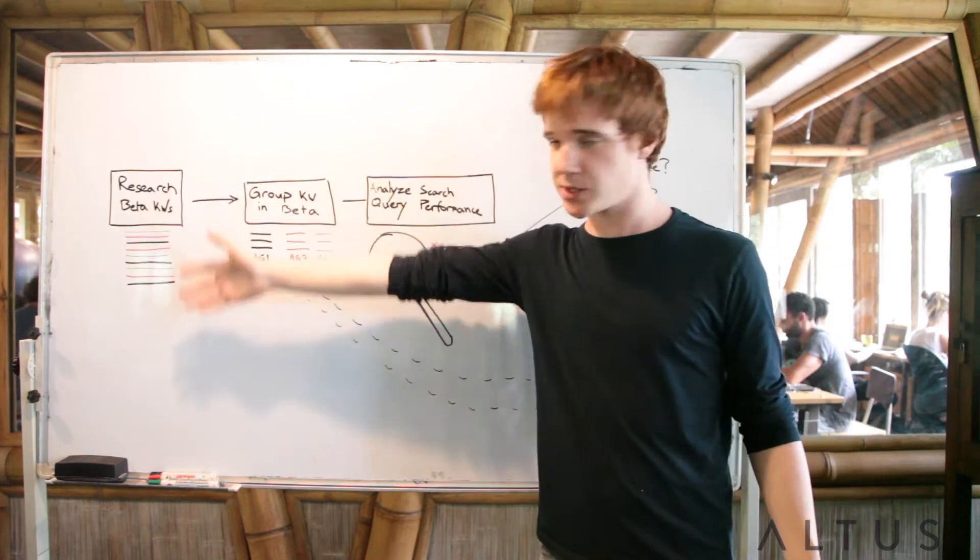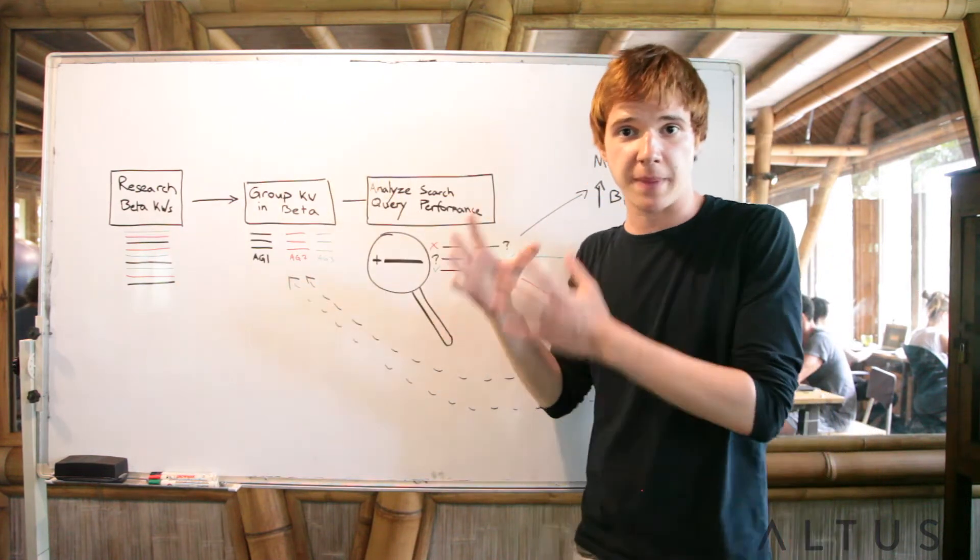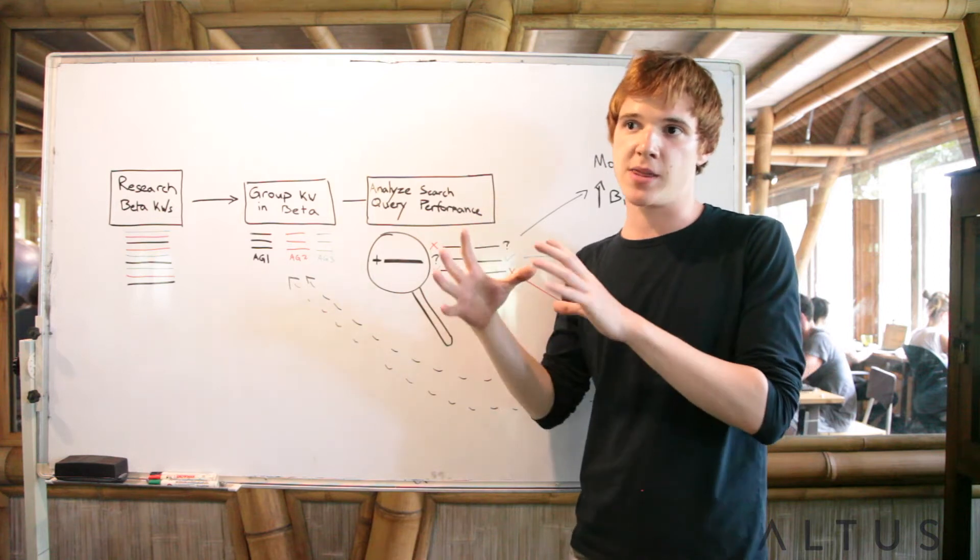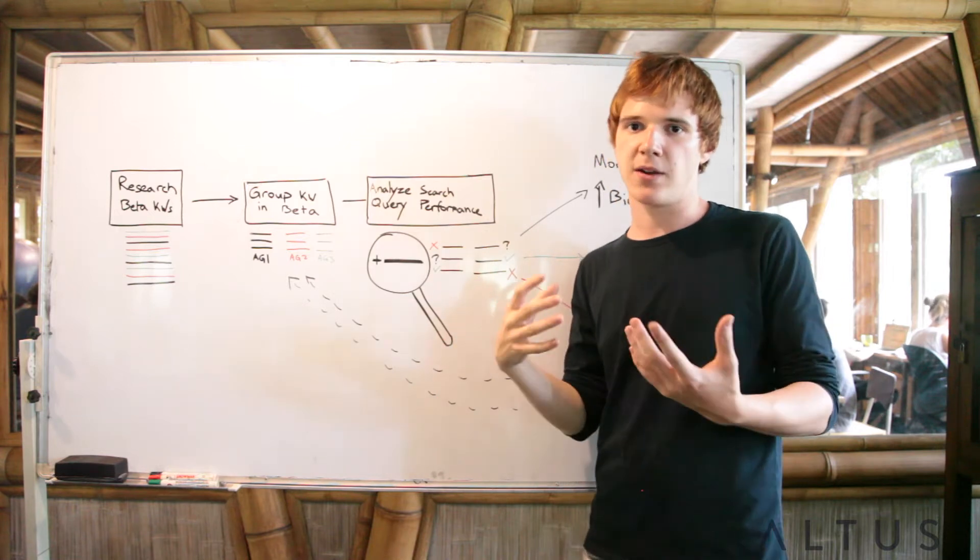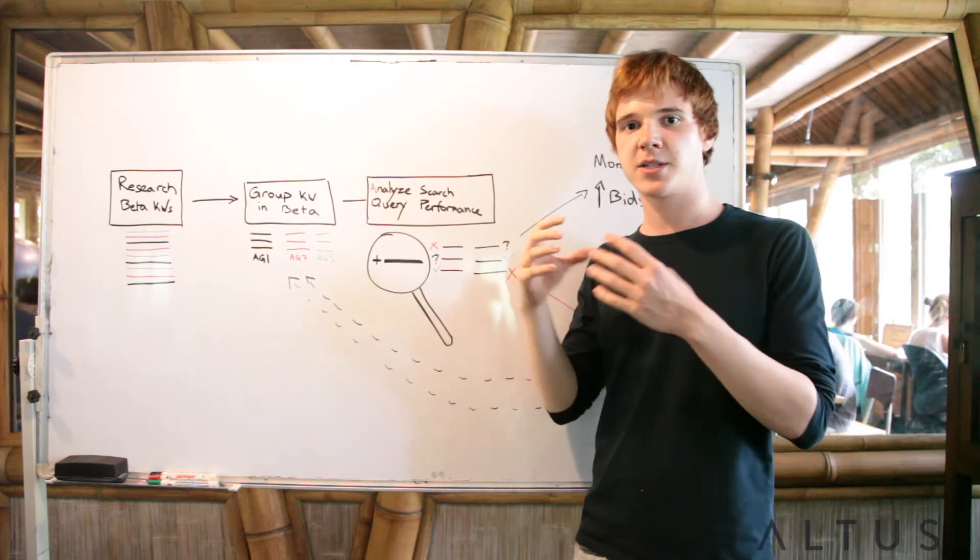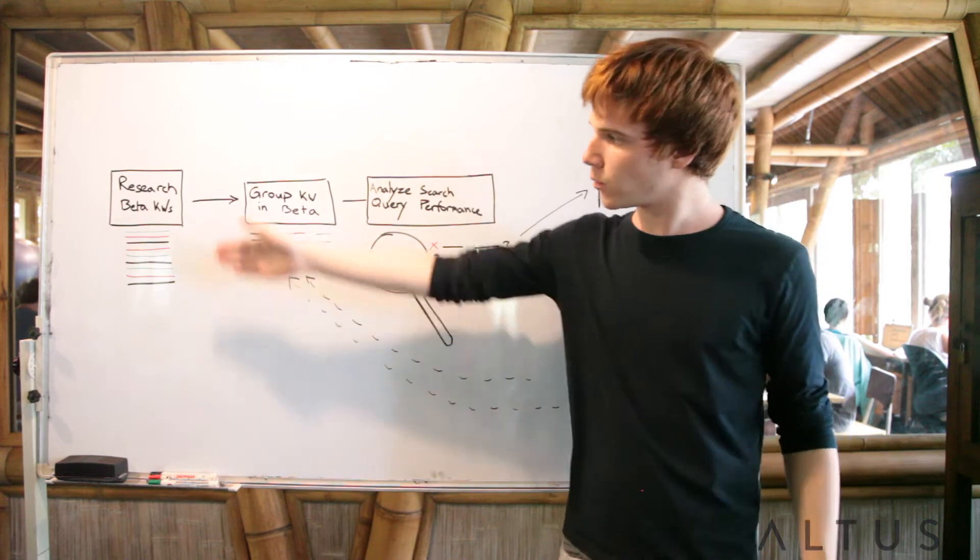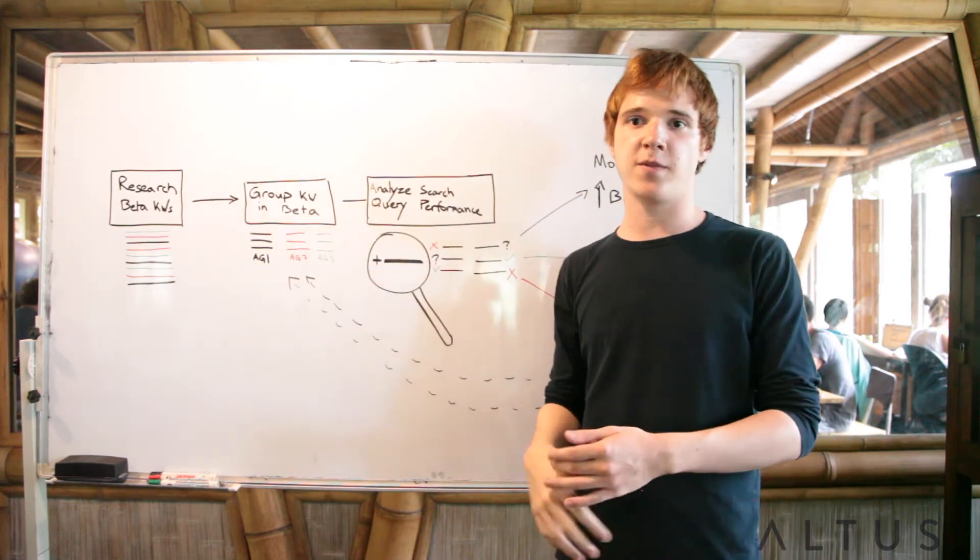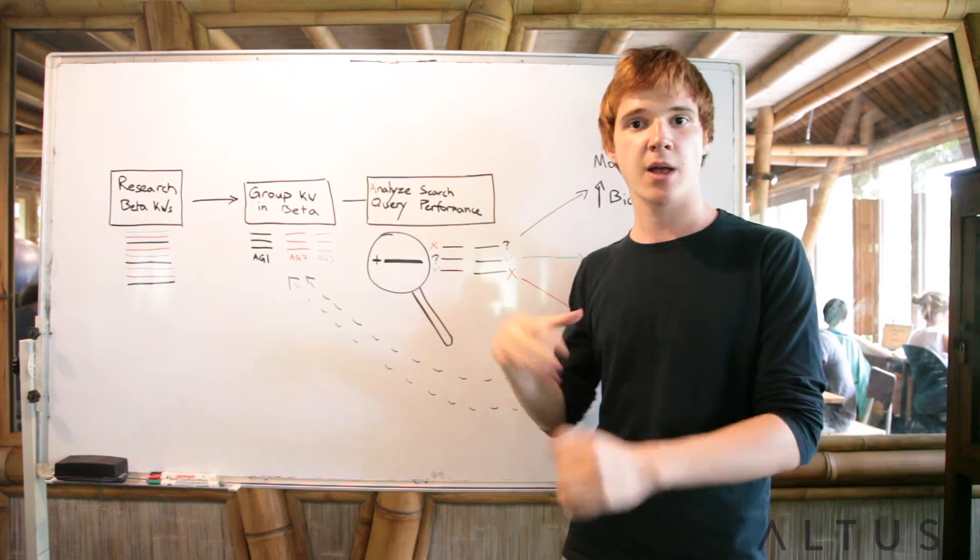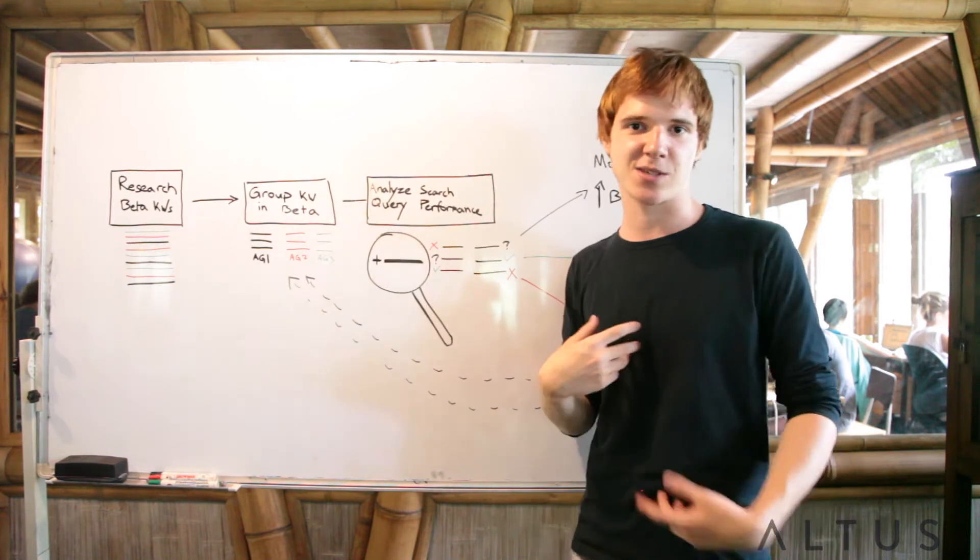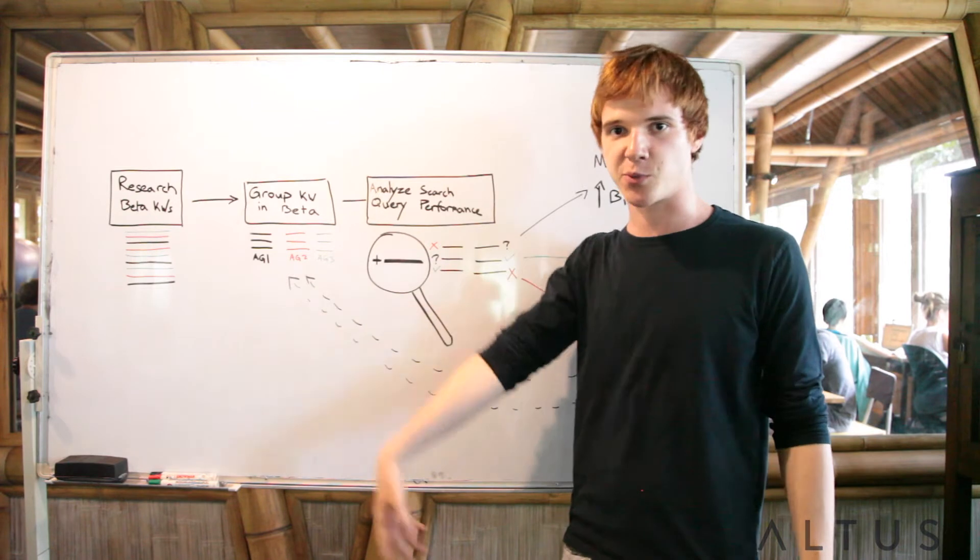First thing we're going to do is research some beta keywords. They're called beta because they're these incubation units - larger groups of modified broad keywords. You don't really know what's good or bad yet, they're just test keywords. You can find them via the Google keyword tool, use tools like SEMrush and SpyFu, plug in your competitor domains. That's what I prefer to do - I leverage my competitors' work as much as I can.